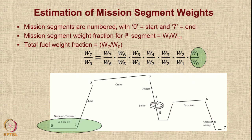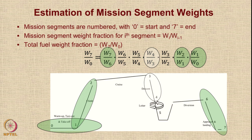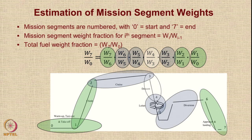For takeoff and climb, we use historical information from Raymer's tables. For descent, we ignore the weight — so w4/w3 = 1. For approach and landing, we again use historical data. Three mission segments use historical data, one segment consumes no fuel. The remaining three segments to calculate are: w3/w2 (cruise), w5/w4 (loiter), and w6/w5 (diversion). We multiply all segment fractions to get the total fuel fraction.